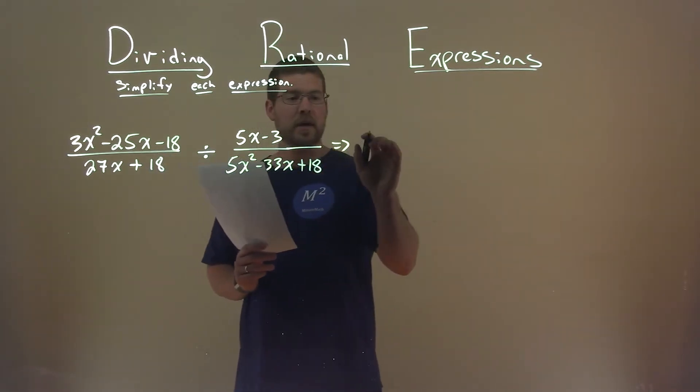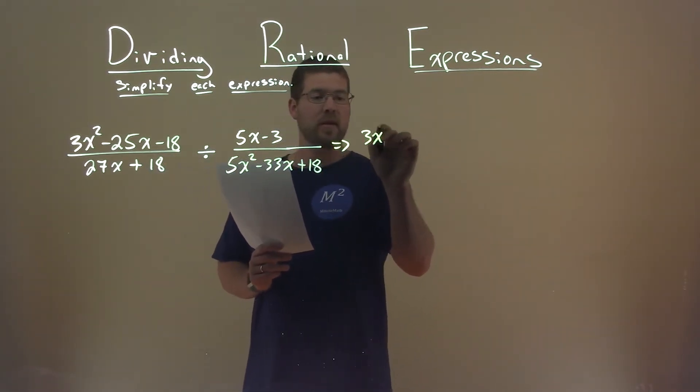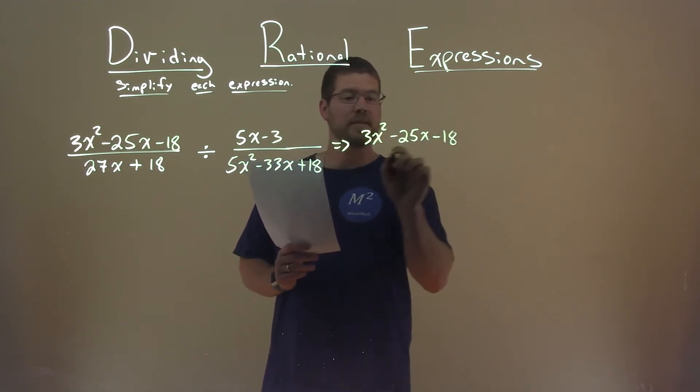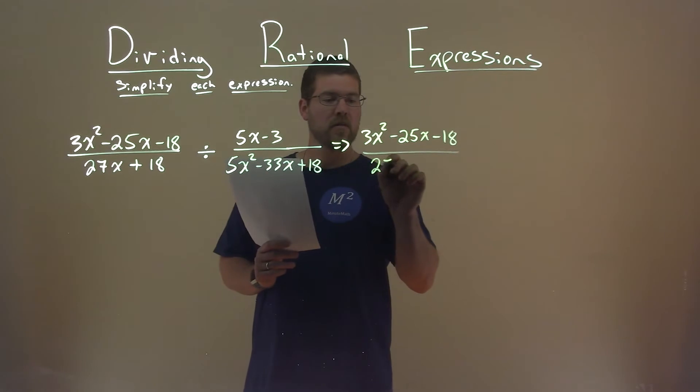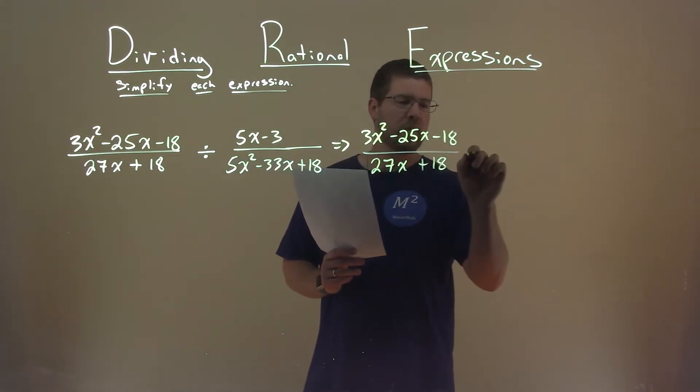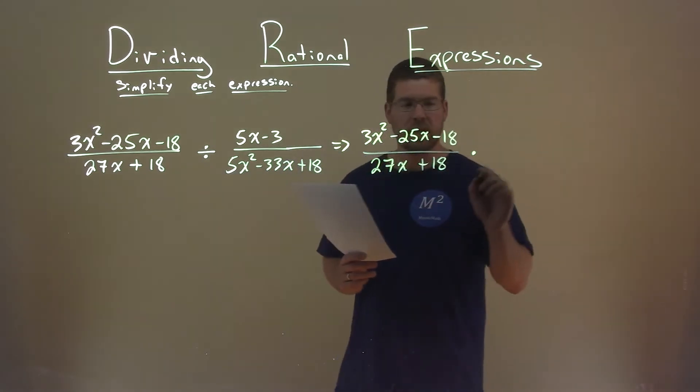Well, I'm going to rewrite this as a multiplication problem. The first part stays the same: 3x squared minus 25x minus 18 all over 27x plus 18. But instead of dividing, we're going to multiply, and we're going to flip the fraction.